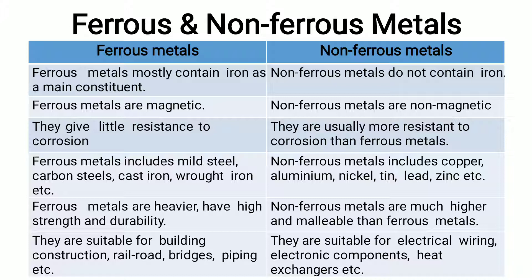Ferrous metals are heavier and have high strength and durability, whereas non-ferrous metals are much lighter and more malleable. Ferrous metals are suitable for building construction, railroad applications, bridges, and piping, whereas non-ferrous metals are suitable for electrical wirings, electronic components, and heat exchanger applications.